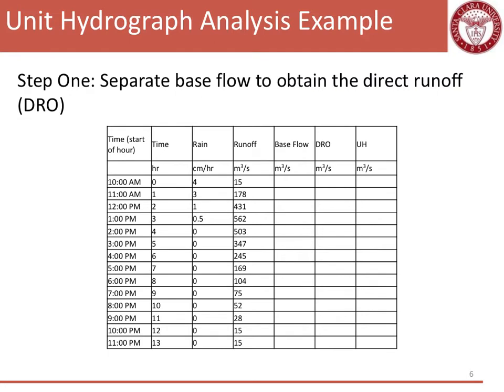Our first step is to separate the base flow to determine the direct runoff. In this case, we were given in our problem statement what the base flow was, it's 15 CMS. So we can go ahead and fill in this chart quite easily. But there are other methods to estimate base flow, which I encourage you to look back in the textbooks and on Camino.